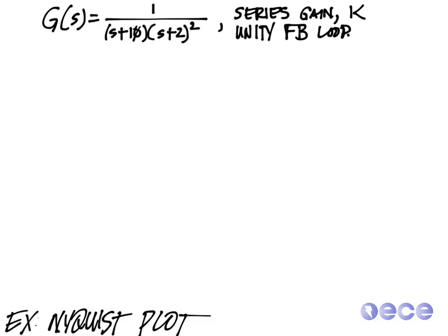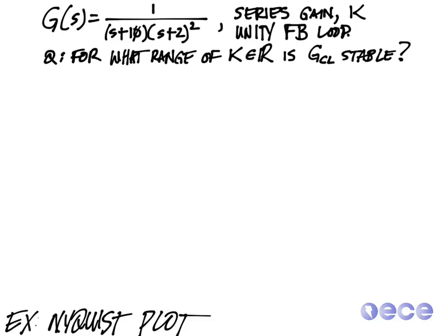We're going to have eventually a series gain K, and the feedback loop will be a unity feedback loop. So the gain K is going to be before the controller, and then our feedback is going to have a gain of minus 1. So for what range of K in the real numbers is the closed loop controller stable?